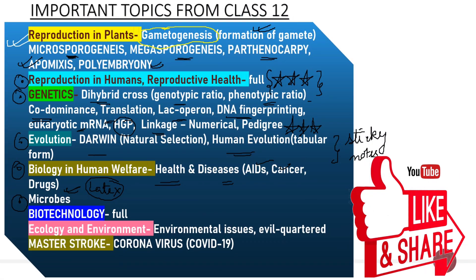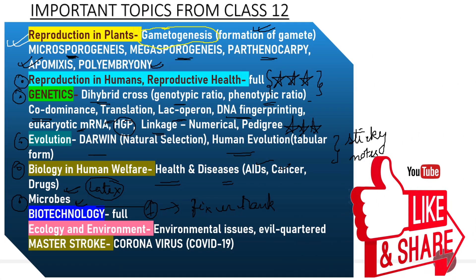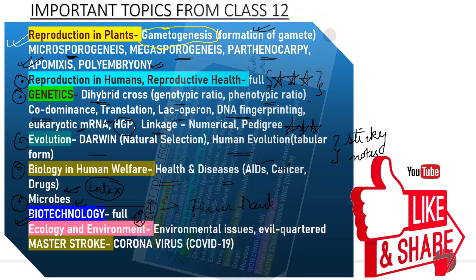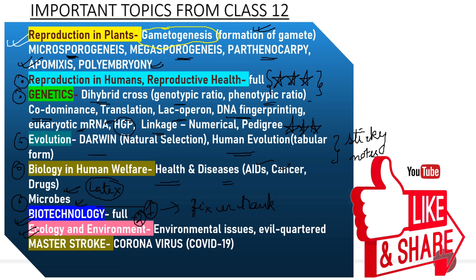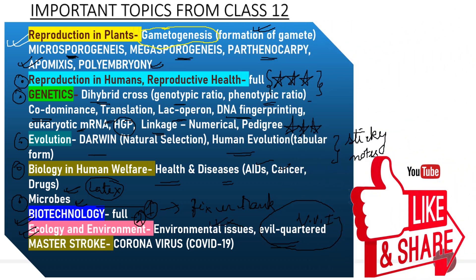Next topic is Microbes, which is really very important. Though only one question comes, that one question is also very important to fix your rank. Next is Biotechnology — you have to study it in full, and it contains two chapters; you can follow some video lectures to study it. The last unit is Ecology and Environment. Do read the ecological pyramid first, which is very important — put VVI important marks on it. Also don't forget to study the environmental issues.